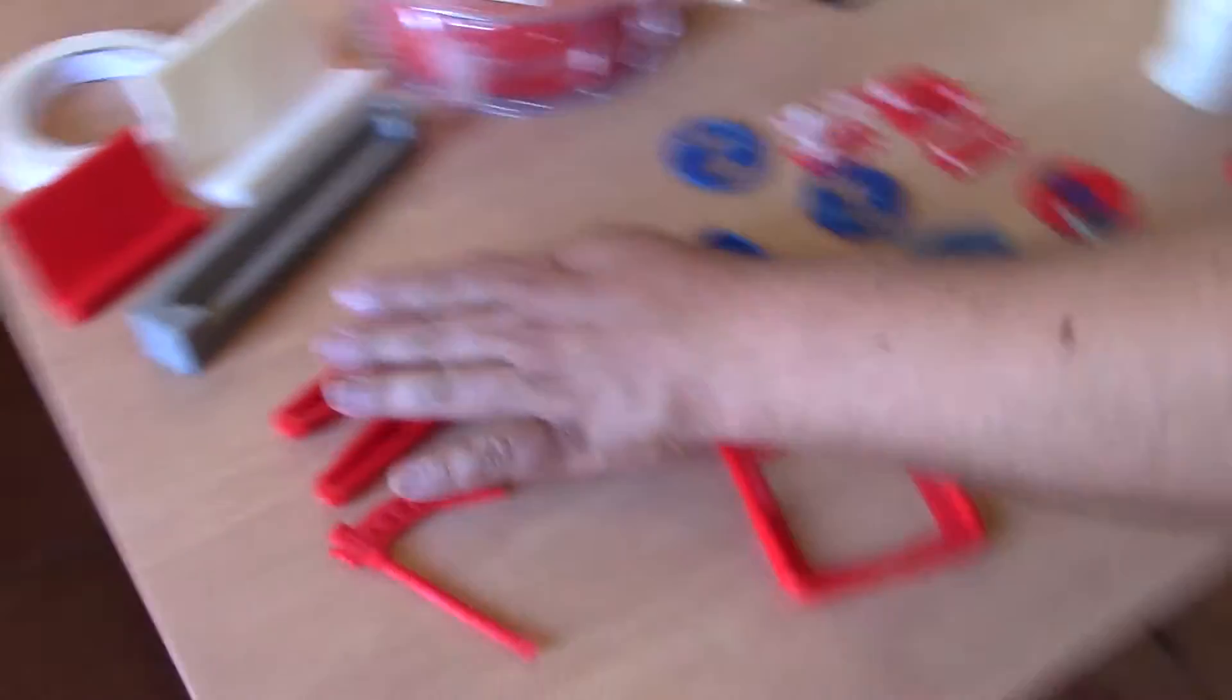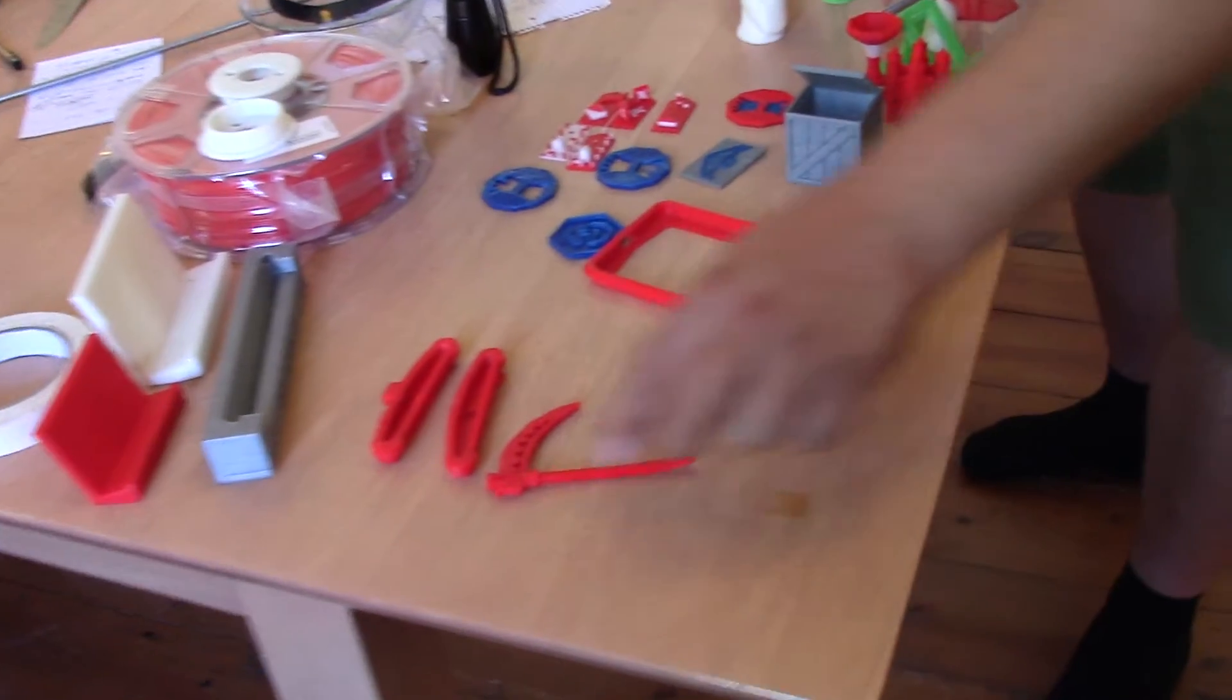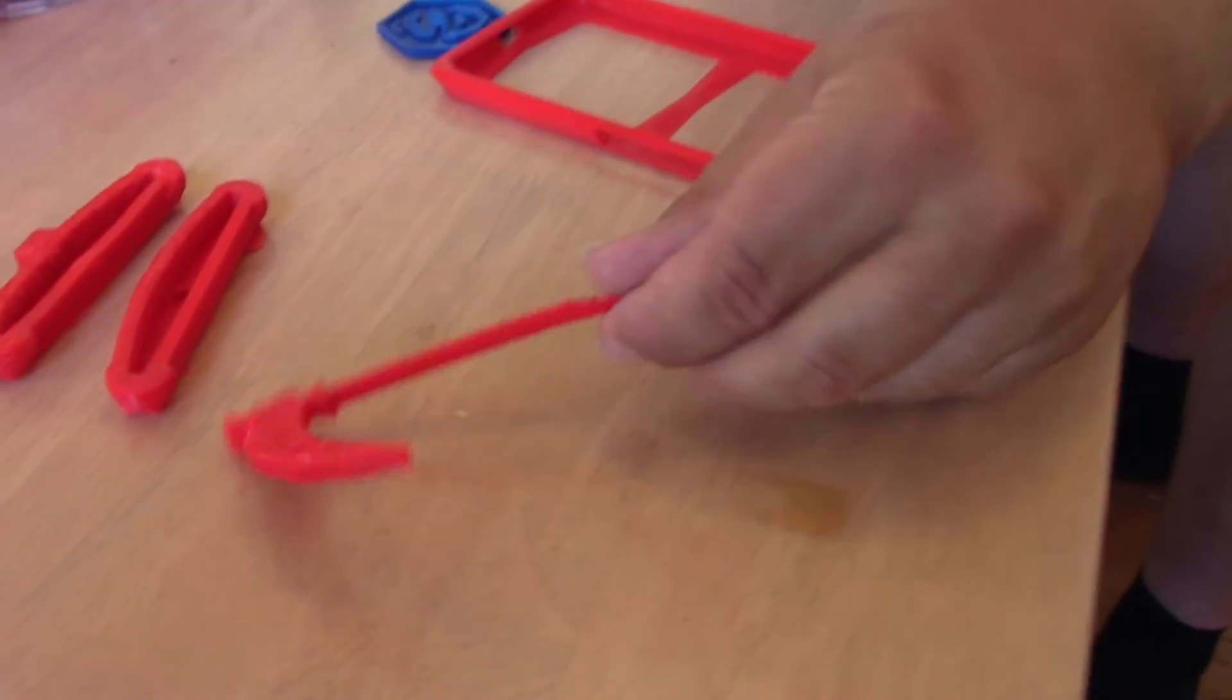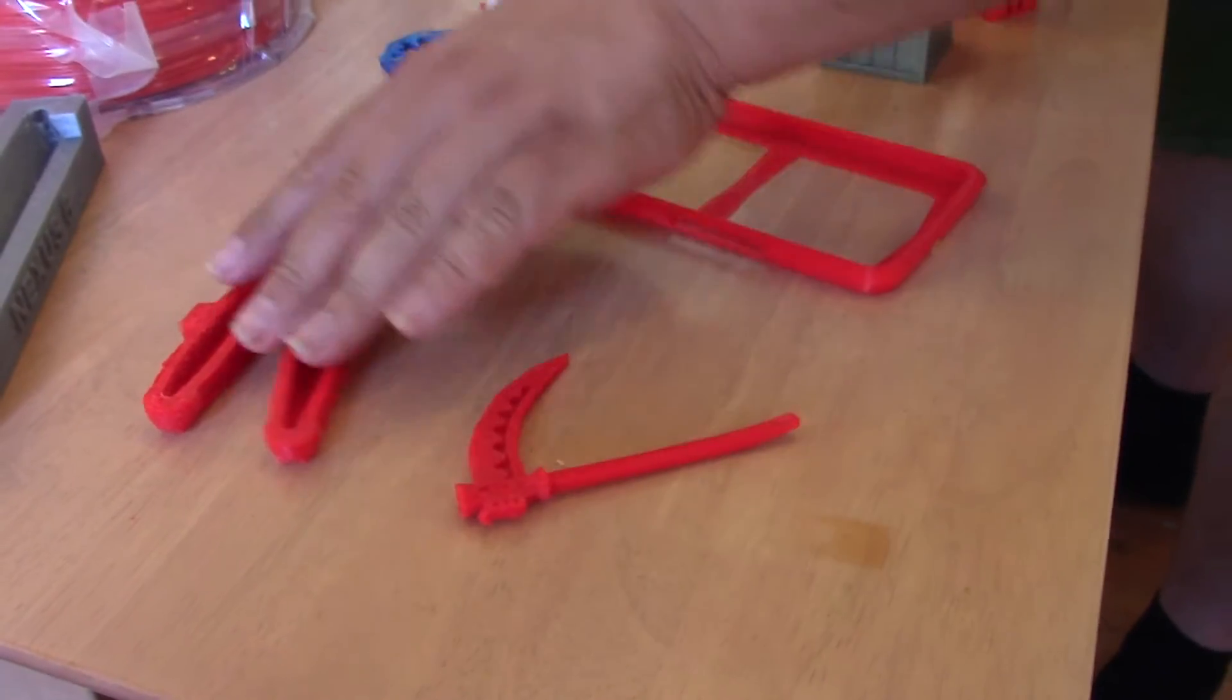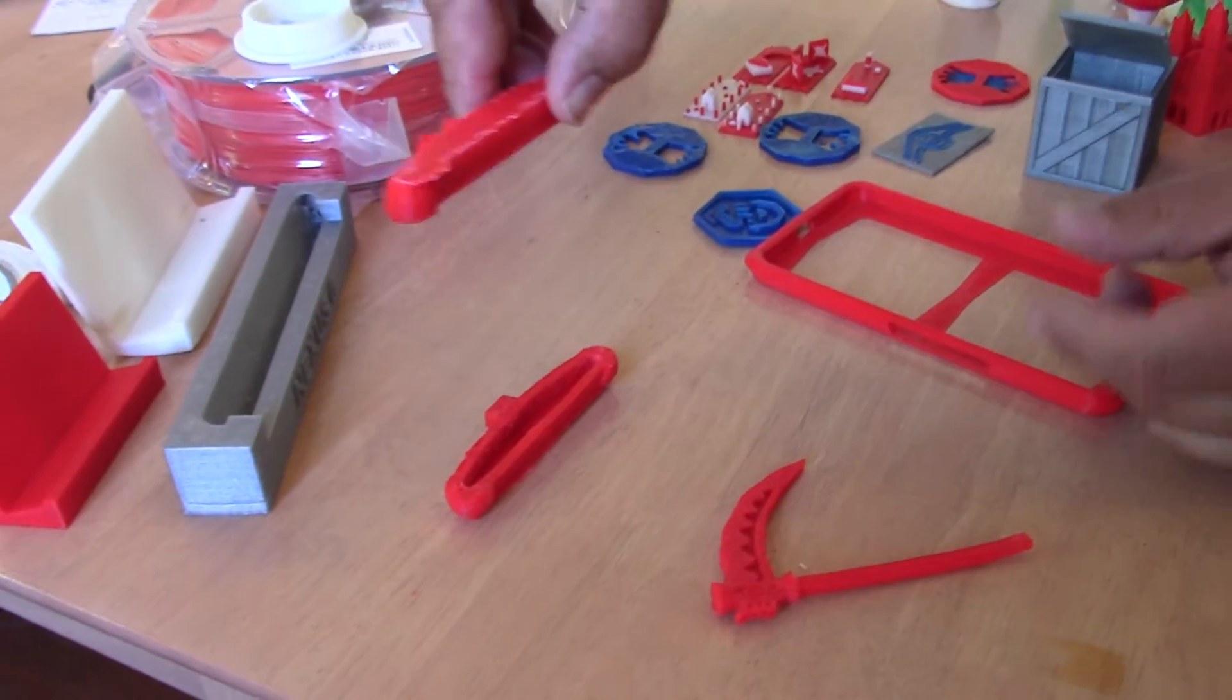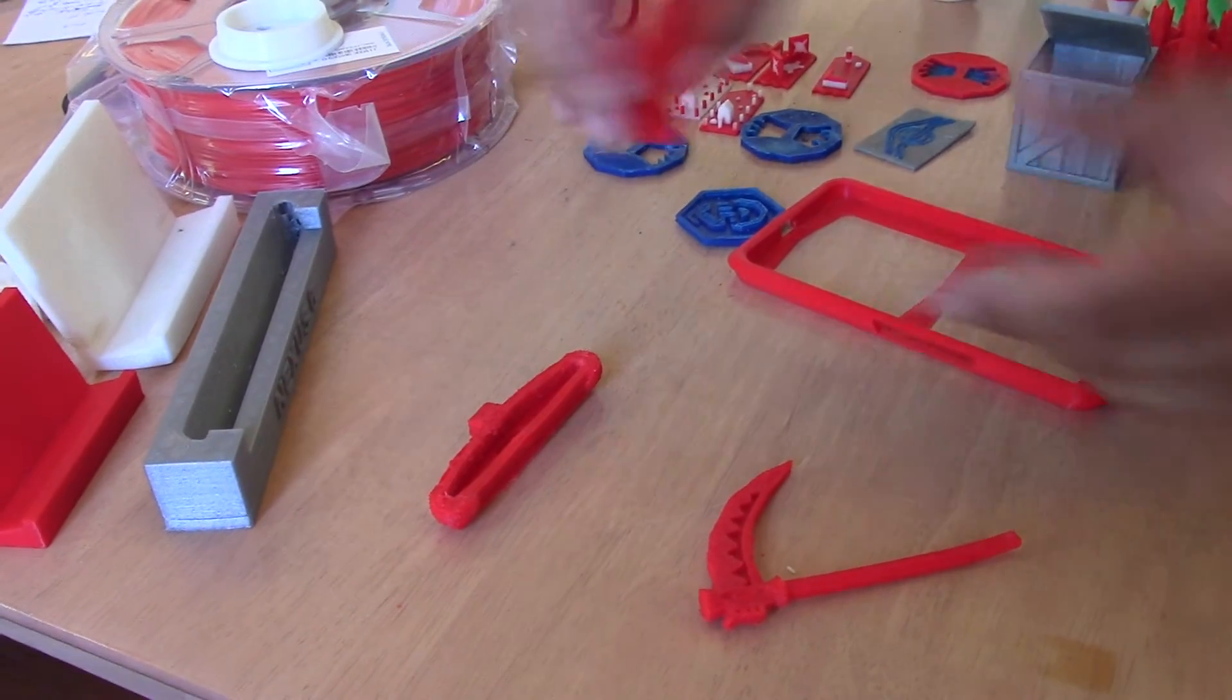These are some prints that didn't go too well. This scythe is printed but on the other side you can see that all the rafting makes it look crappy. This is a phone stand. It should be a two-part phone stand like this but it hasn't worked out.